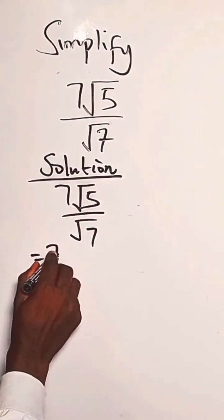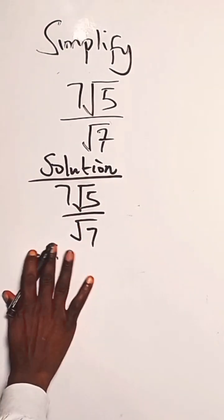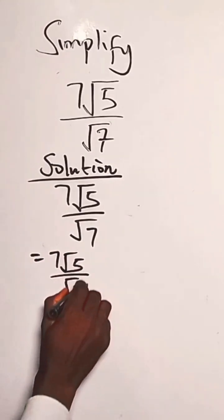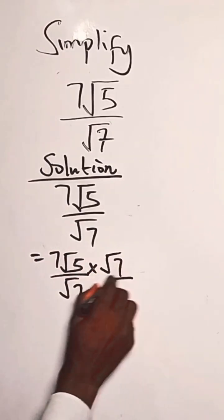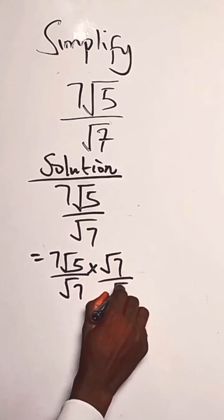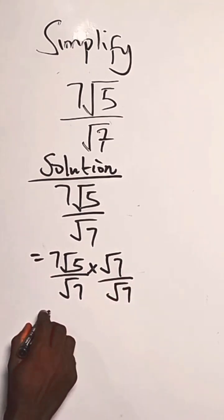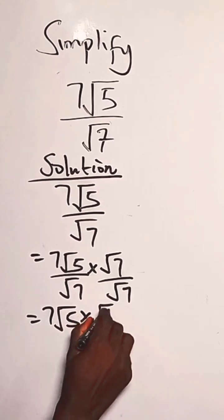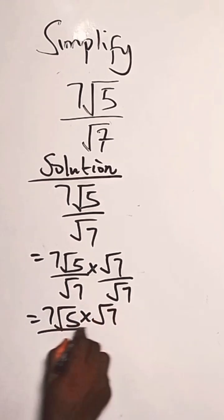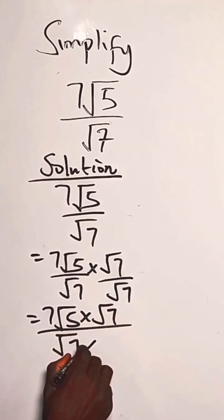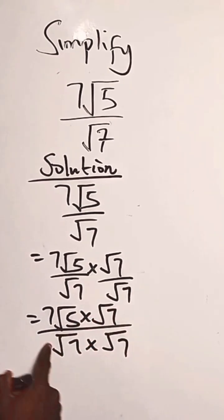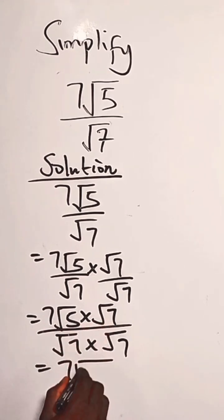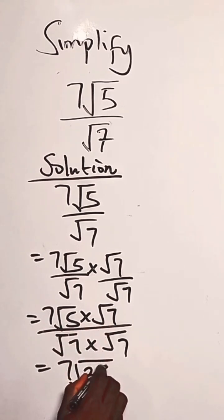So we have 7√5 over √7, times √7 over √7. This gives us 7 times √5 times √7 over √7 times √7. The denominator simplifies to 7, and the numerator gives us √35, so we have 7√35 over 7.